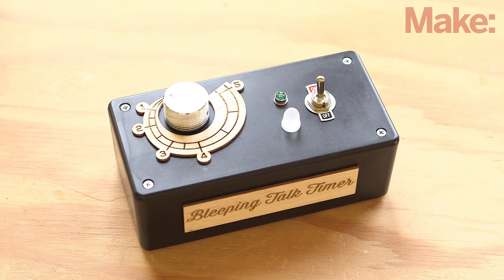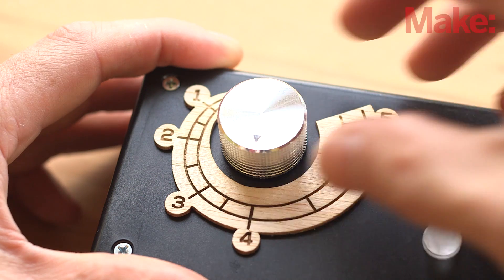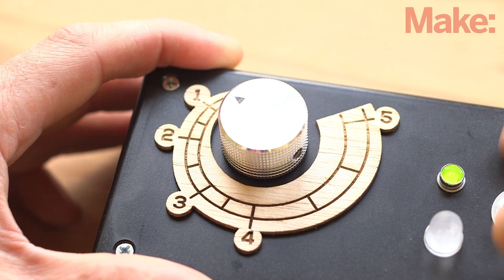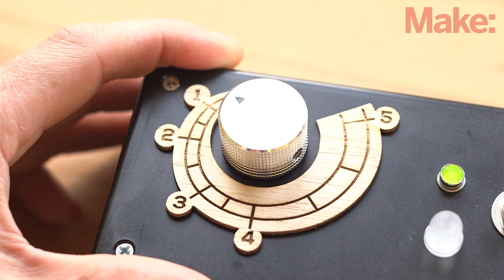And a few decorative embellishments like these laser etched labels always help your build look snappy. That's it! Now you no longer have to sit there listening to someone drone on and on in your next meeting. Simply adjust the potentiometer to the desired length of time, flip the switch, and let the countdown begin.